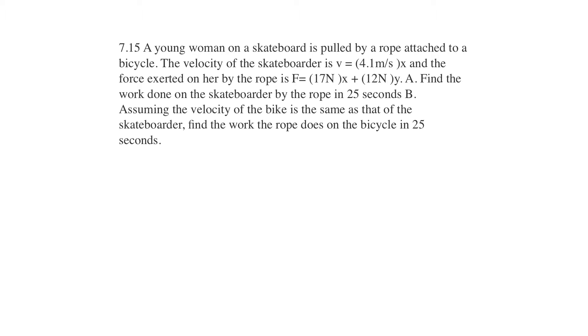A young woman on a skateboard is pulled by a rope attached to a bicycle. Let me see what I can do. Okay, that's the best I can do for that. So she's pulled by a bicycle. The velocity of the skateboarder is 4.1 meters per second in the X. So I assume the X is going straight.